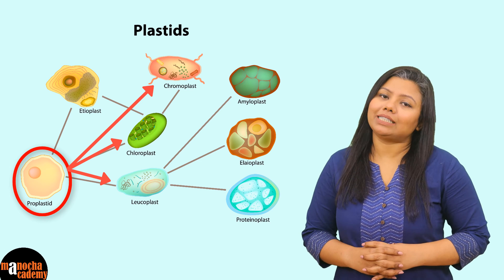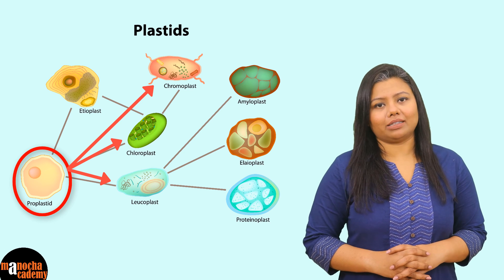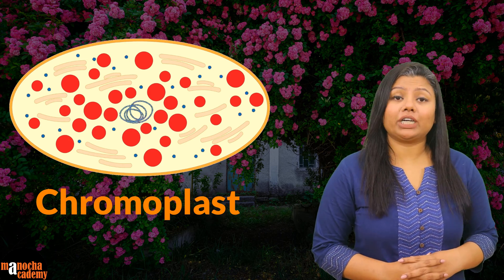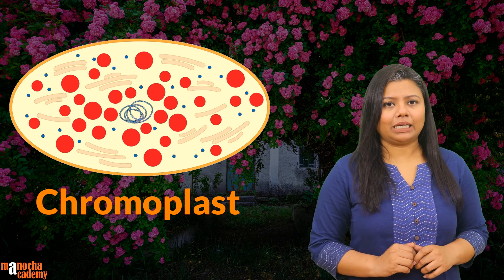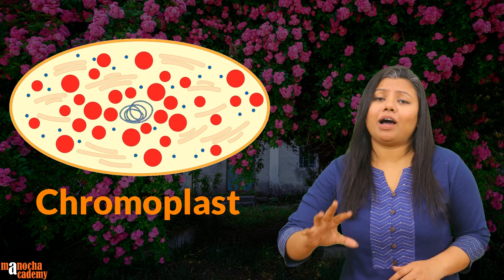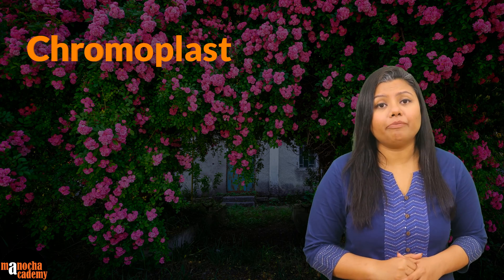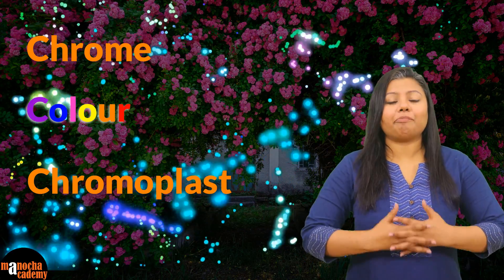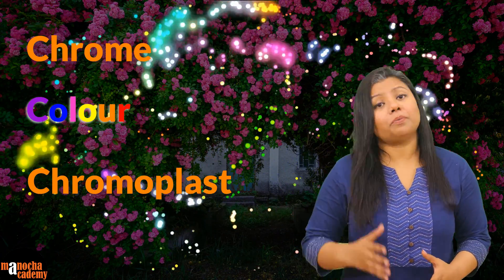Let us talk about the different types of plastids that can be found in plants. Chromoplasts are those colored plastids which contain pigments other than green. If you can see any part of a plant, for example petals or fruits, ripe fruits, where you can see bright red, orange, yellow or even purple color, those are the parts that contain chromoplasts. The word chromoplast comes from the word chrome or chroma meaning color. So these plastids have pigments which have a variety of colors apart from green.